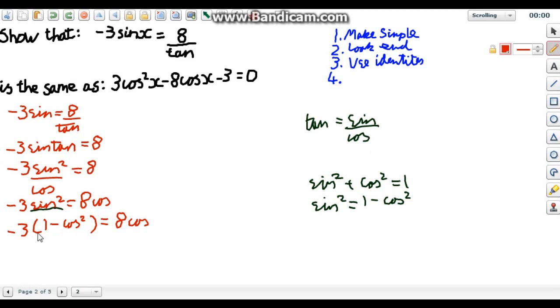We've got brackets this time. Don't like them. They're complicated. So we're going to times them out. So we get negative 3 plus cos squared is equal to 8 cos.